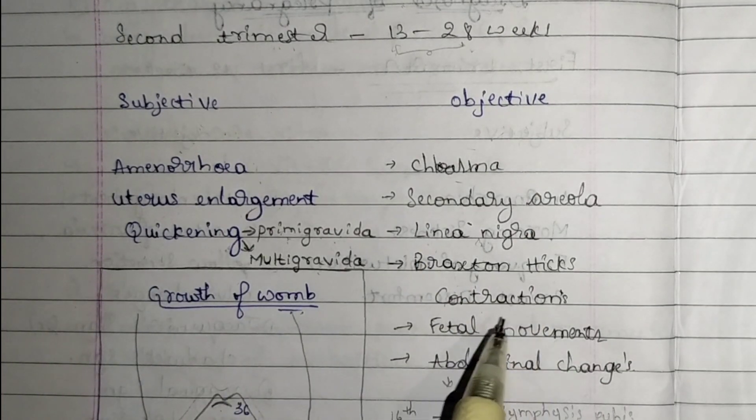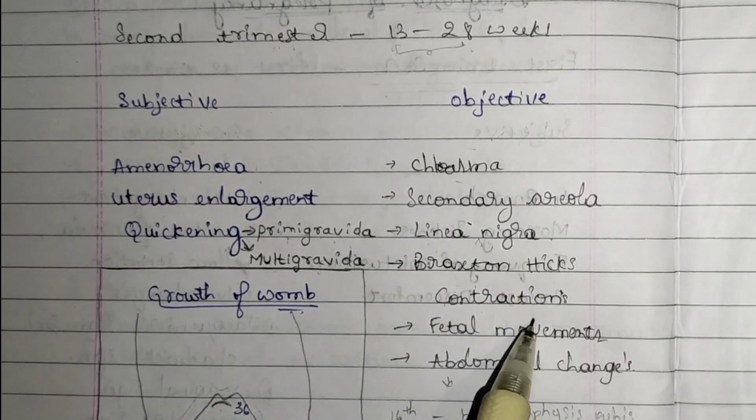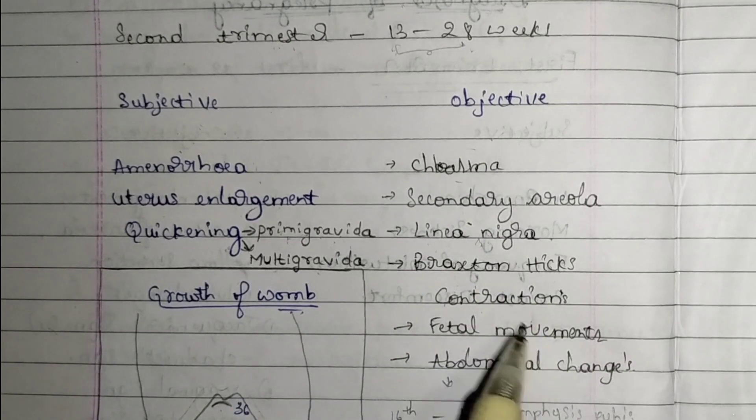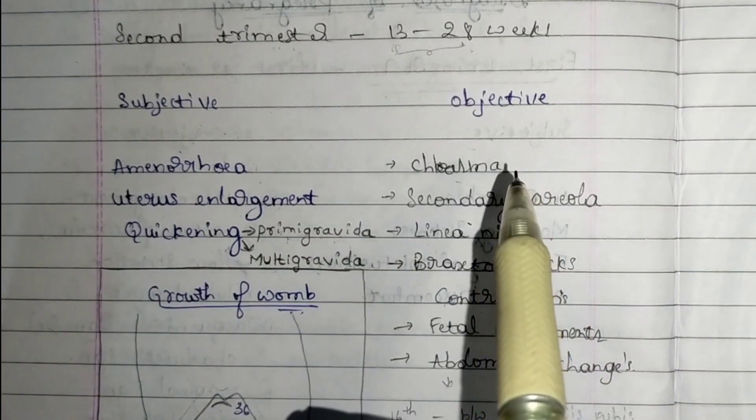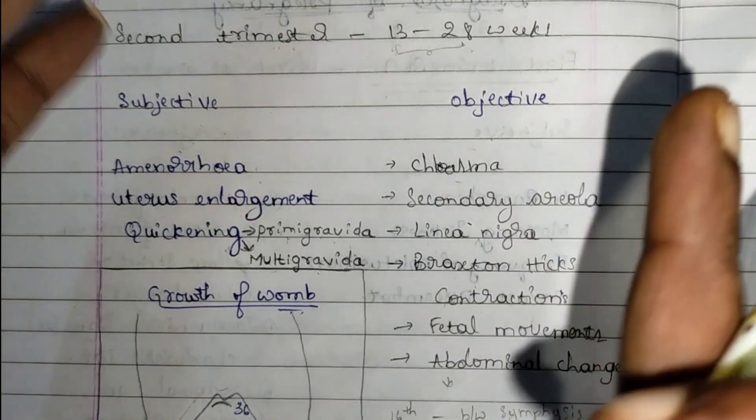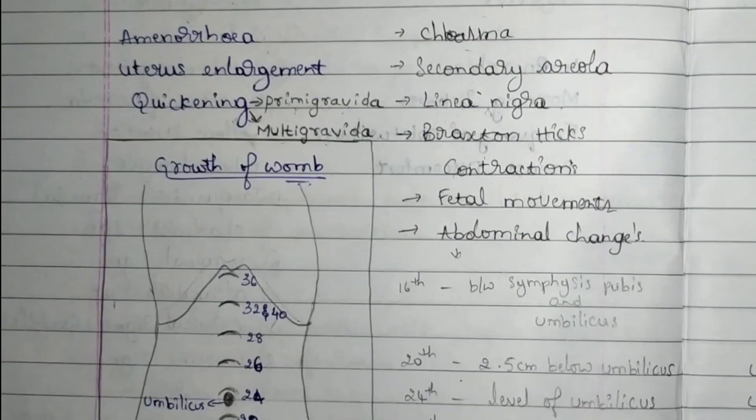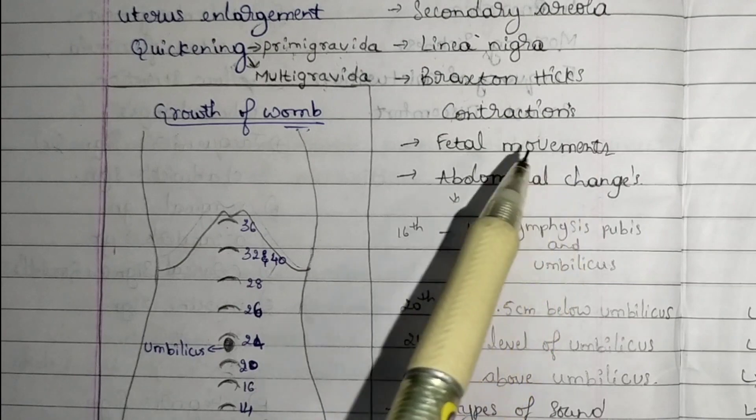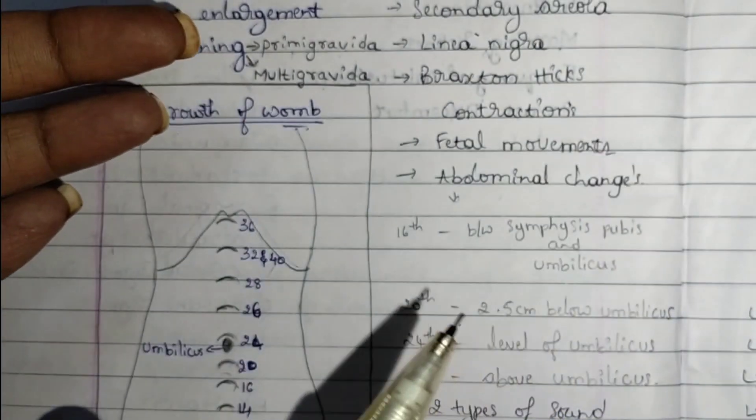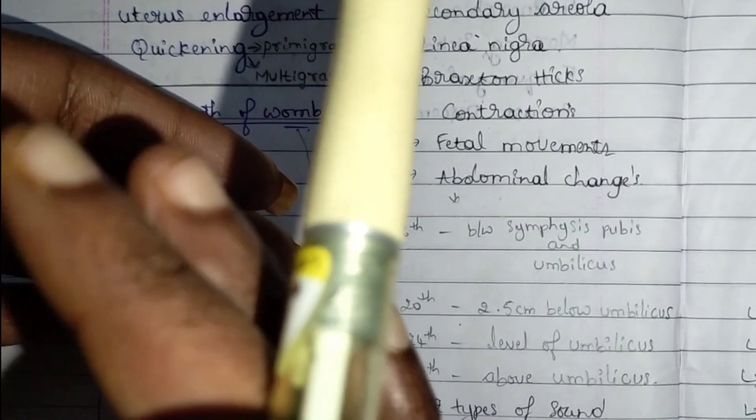Fetal movement, which is quickening in scientific terms, can be felt by placing your arm on the uterus laterally. Abdominal change refers to uterus enlargement - how the uterus is enlarged, in which week, and at what stage.